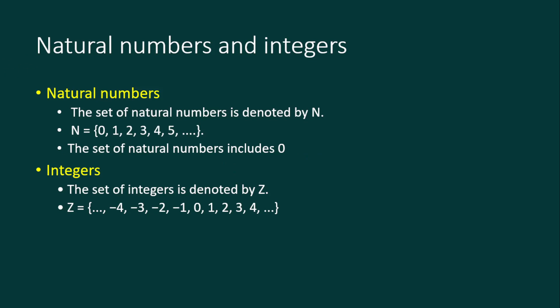The first topic is natural numbers and integers. Natural numbers are basically all the positive discrete numbers, or all counting numbers, which start from one, two, three, four and so on. All these numbers are natural numbers.